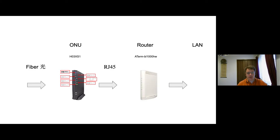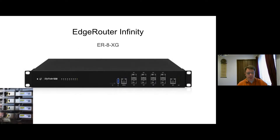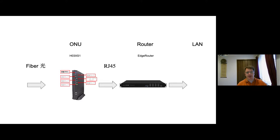While the engineer was here installing the fiber, I asked if I was allowed to use my own router and he said just turn their router off, then plug mine in and wait. So I picked up an EdgeRouter Infinity, which has 8 10GB SFP Plus cages and some modules to go with that. The idea was to have the fiber come into the ONU, then connect into the EdgeRouter and then my LAN.